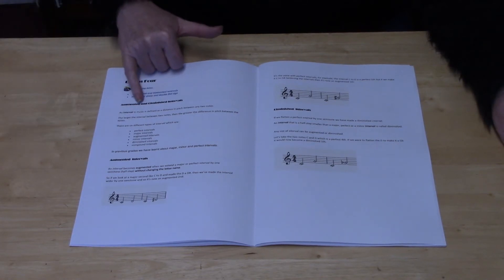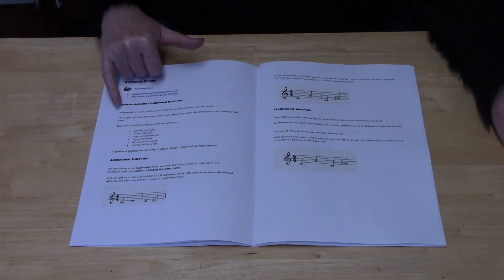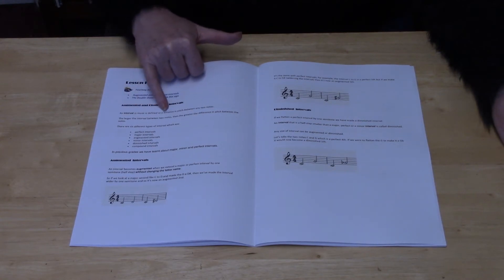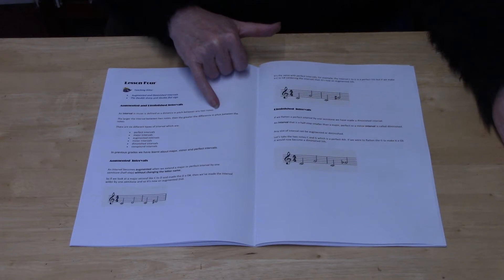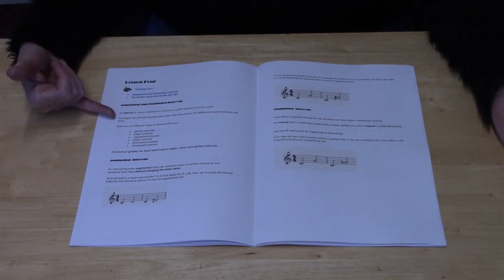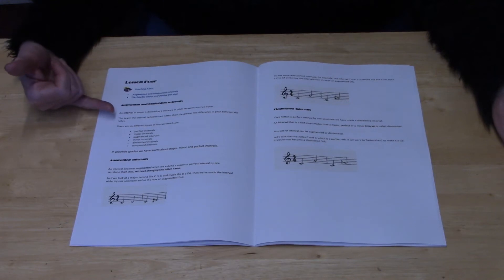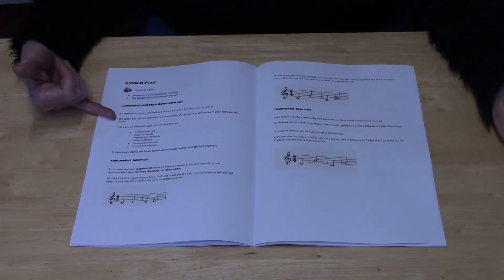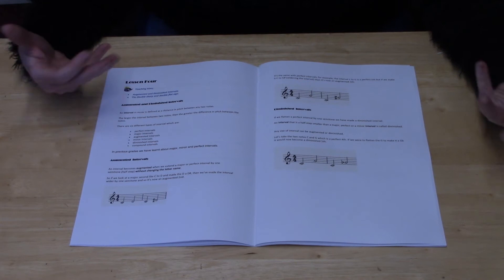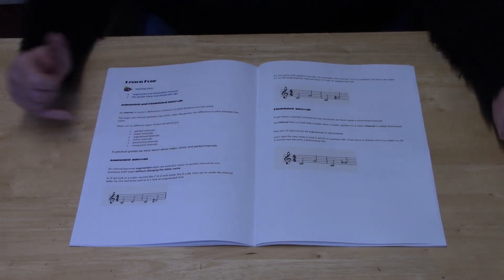Augmented and diminished intervals. An interval in music is defined as a distance in pitch between any two notes. The larger the interval between the notes, then the greater the difference in pitch between the notes. There are five or six different intervals that you can get, and they're all listed here.